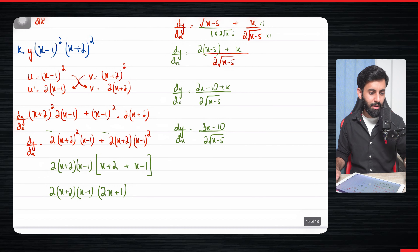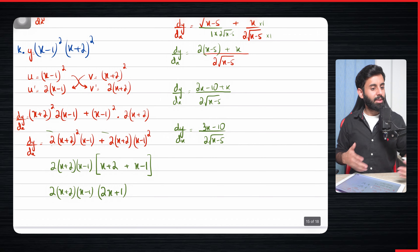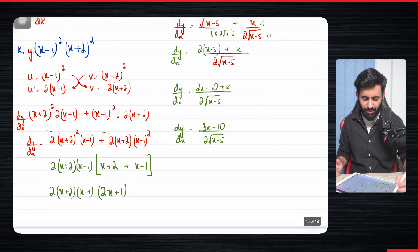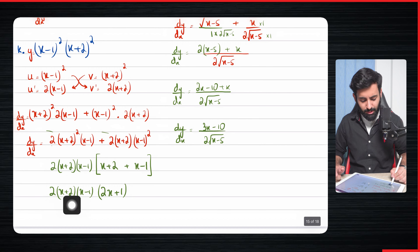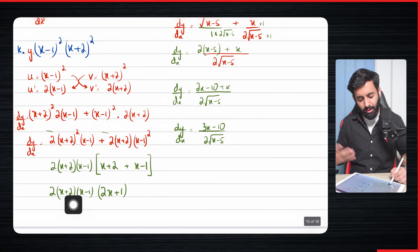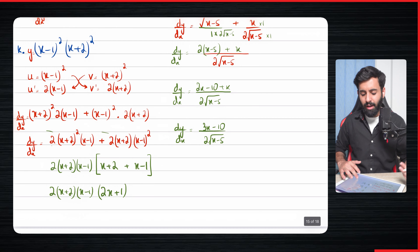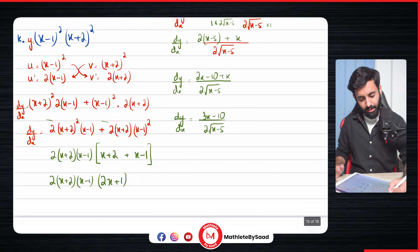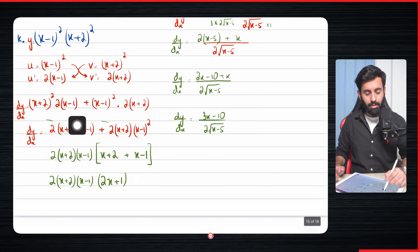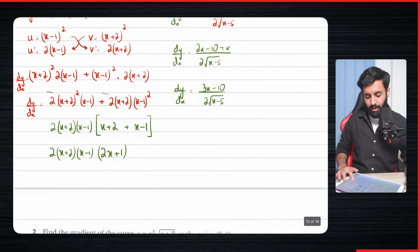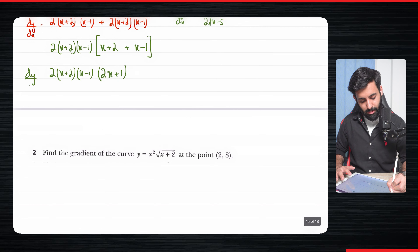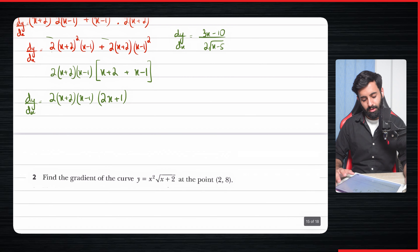Let me check the answer — yes, this is the final answer. Even if you had stopped before further simplification that's perfectly fine, but make sure to read the question carefully. So dy/dx equals 2(x+2)(x−1)(2x+1).